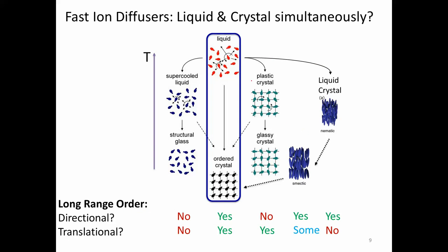That was an example of a form of matter occupying another point on the spectrum between liquids and crystals. Another really interesting question is: is it possible to have materials that exhibit attributes of both liquids and crystals simultaneously? We call these things fast ion diffusers.